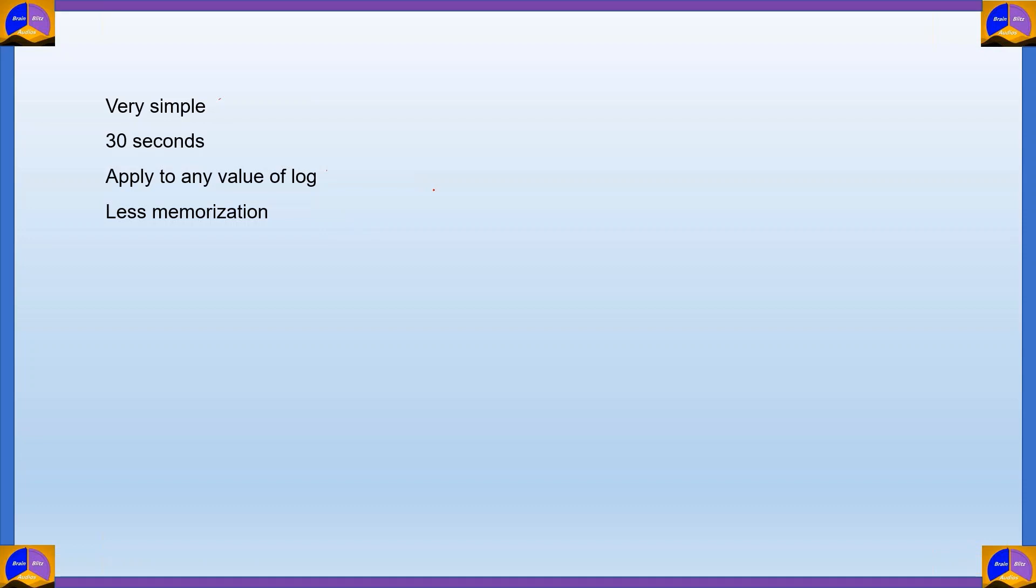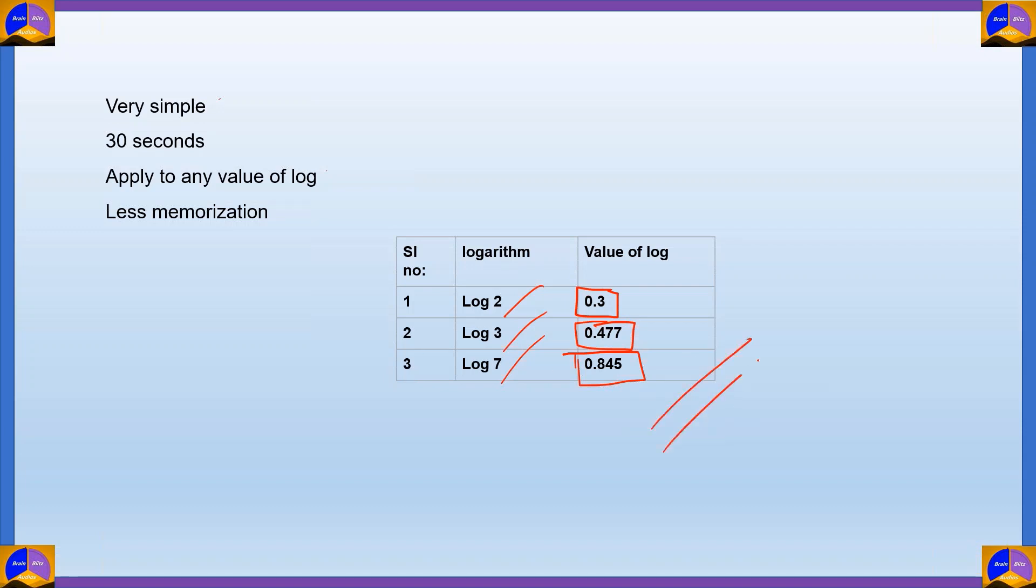So let's show you what you actually need to memorize in order to use my method. We have the values of log 2, log 3, and log 7. These are the values that you should commit into your memory. The value of log 2 is 0.3, the value of log 3 is 0.477, and the value of log 7 is 0.845. These are the three values that if you learn by heart, it will help you in solving any logarithm problems.